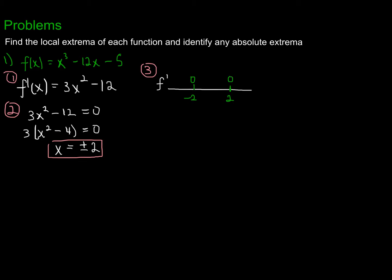To the left of −2, I'll use x = −3: 3(9) − 12 = 15, which is positive. In between −2 and 2, I'll use x = 0: 3(0) − 12 = −12, which is negative. To the right of 2, I'll use x = 3: by symmetry with −3, the result is 27 − 12 = 15, which is positive.